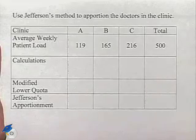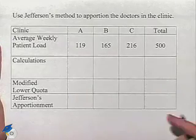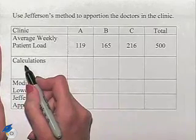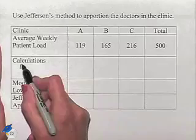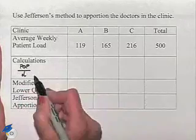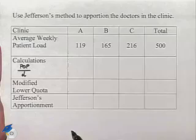In Jefferson's method, we're going to use a value for division, which is going to be smaller than the value that we have with the standard divisor. So we'll be taking our populations and we'll be dividing by a value D. Now, we can determine this value using trial and error.